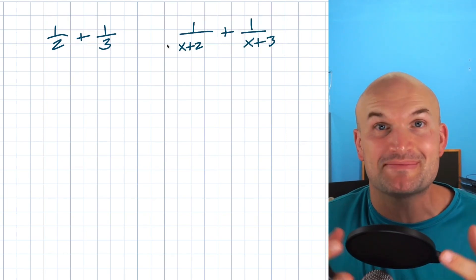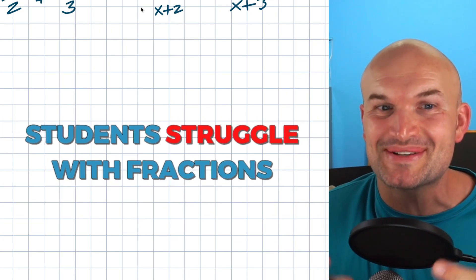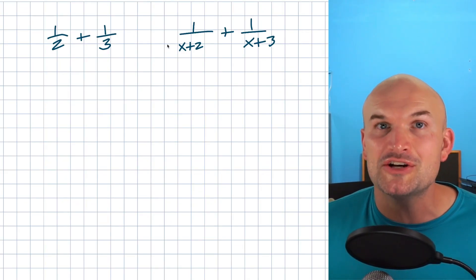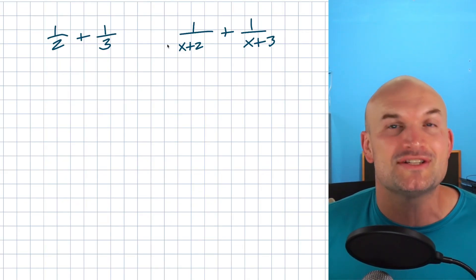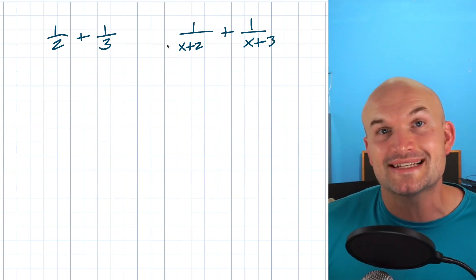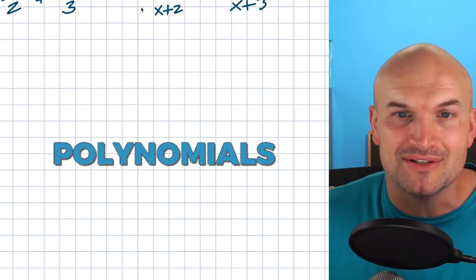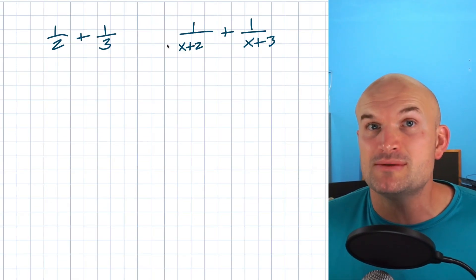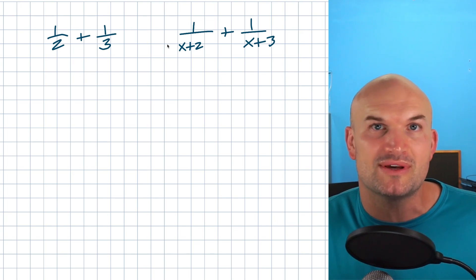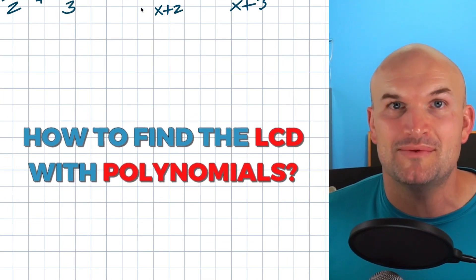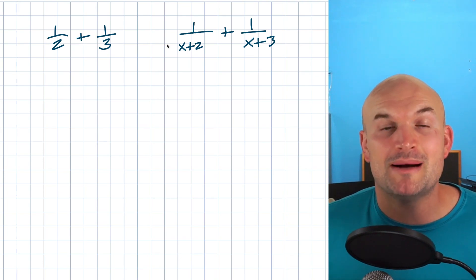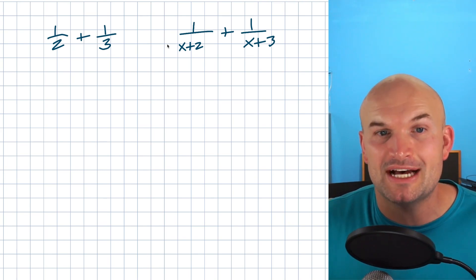The reason why I cover this is because students struggle with fractions. And if you're still struggling with fractions, this understanding of the LCD and operations with fractions is going to be helpful. And if you're working on polynomials, one of the more confusing parts is: if I can do fractions with numbers, how do I find the LCD with polynomials? Let's compare the two problems for how to find the LCD.